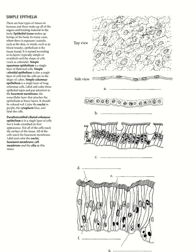Our first diagram here we're looking at simple squamous epithelium. Anytime we're talking about tissues and it's referred to as simple, it means it's made of one layer. Squamous cells are kind of squished — they're very good for diffusion because they're thin. Below that we have simple cuboidal epithelium, which is one layer of cube-shaped cells.